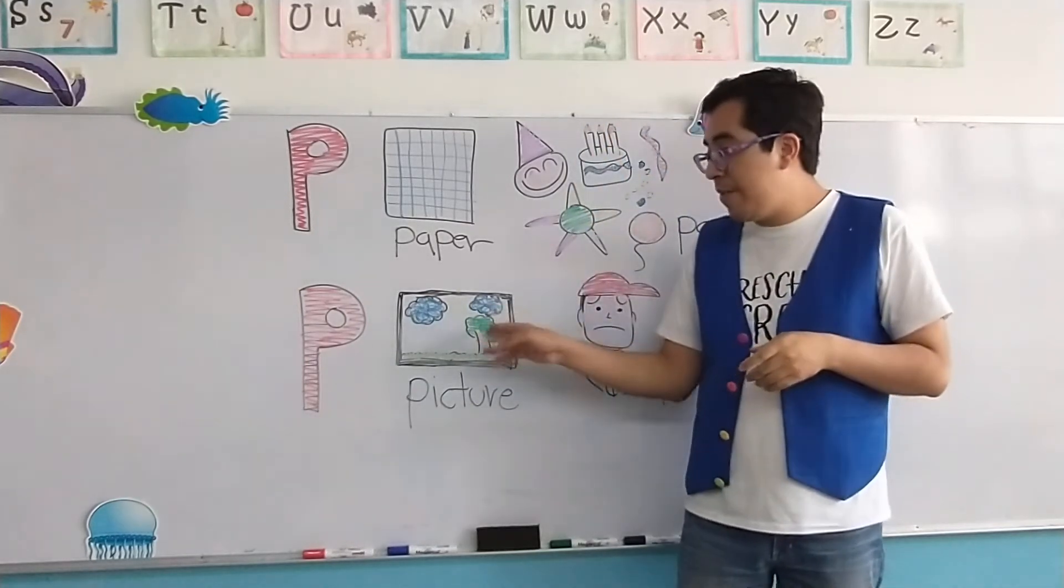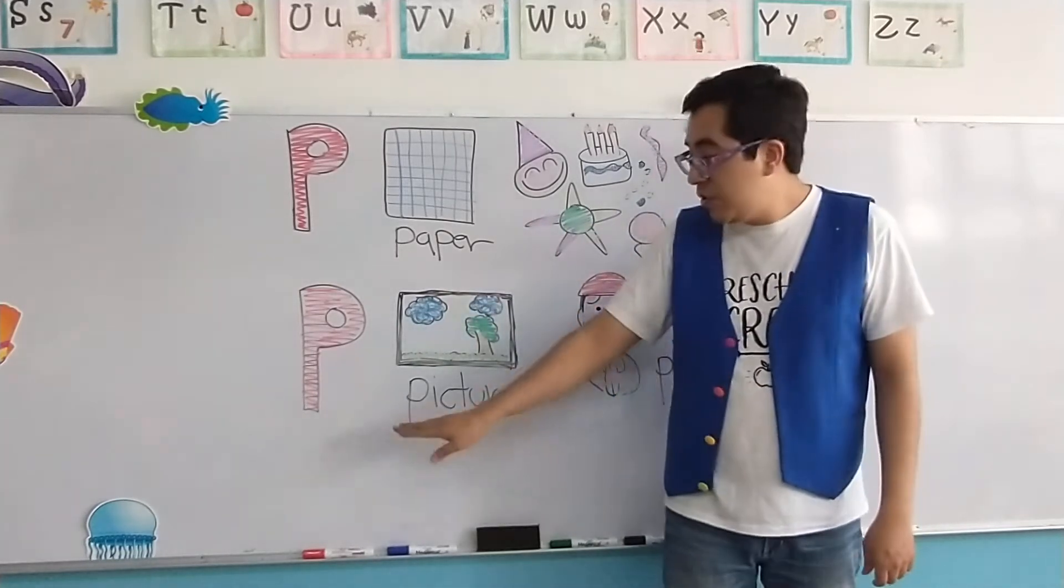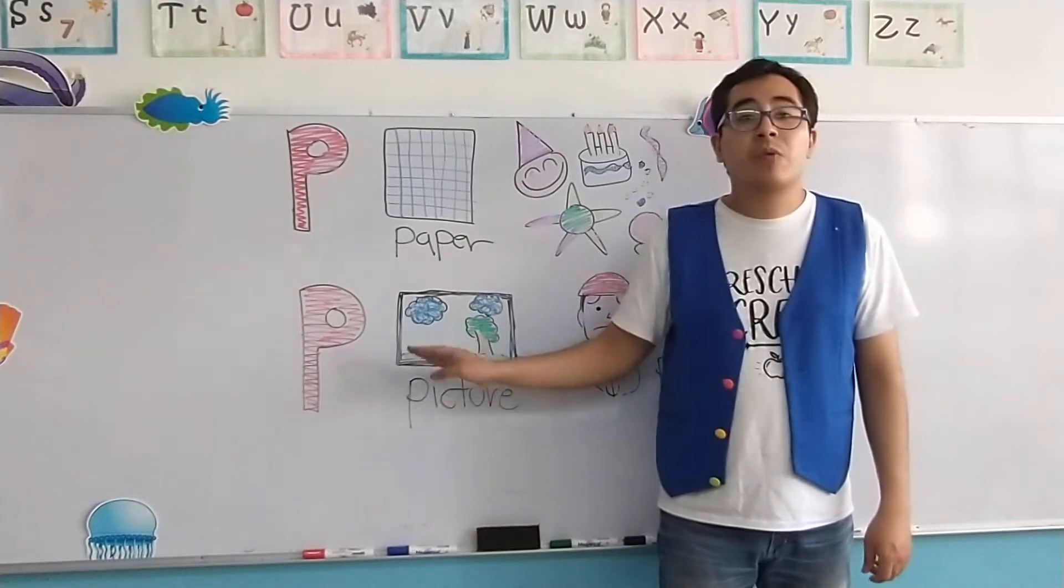As you can see here, we have a tree and the beautiful sun in the middle of two clouds. So, picture, una imagen.